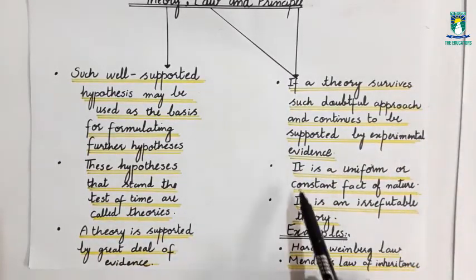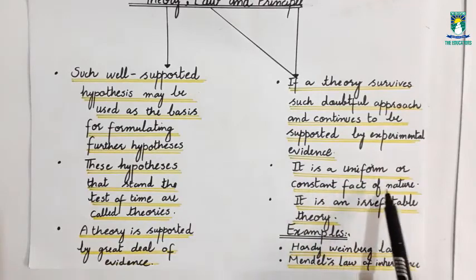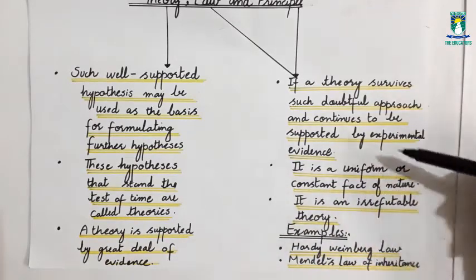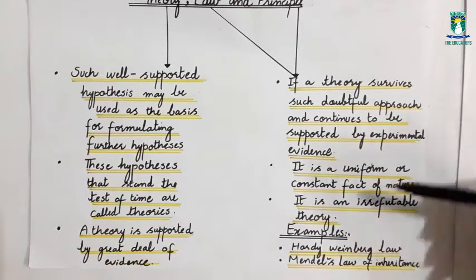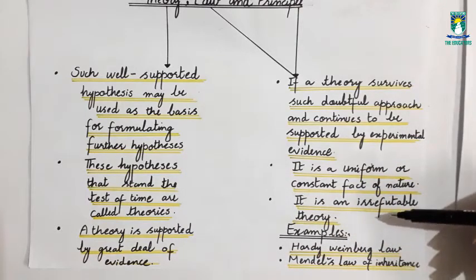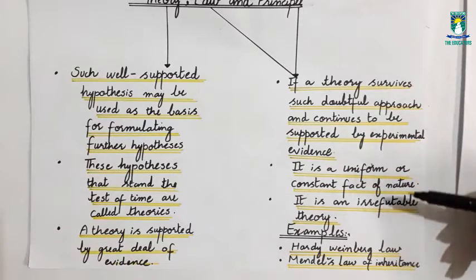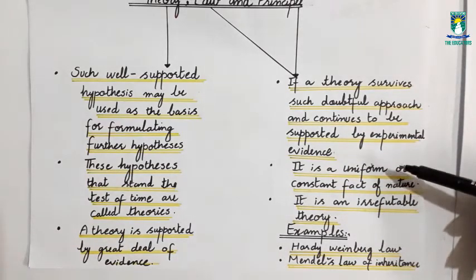A scientific law is a uniform or constant fact of nature. It is uniform, constant, and does not change. It is an irrefutable theory, such a theory that cannot be rejected. Examples of scientific laws include Hardy-Weinberg Law and Mendel's Law of Inheritance.